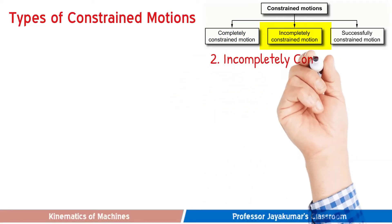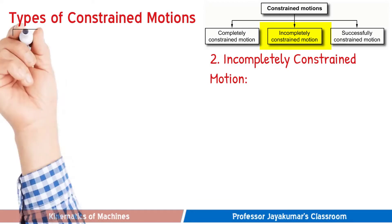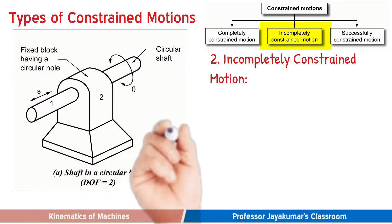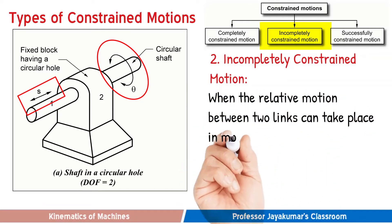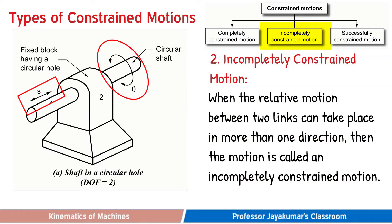Now we will move on to the second type, which is incompletely constrained motion. Consider a circular shaft moving in a circular hole. In this case, the circular shaft will have two types of motion — it can have a rotational motion as well as reciprocating motion. When the relative motion between two links can take place in more than one direction, then the motion is called an incompletely constrained motion.